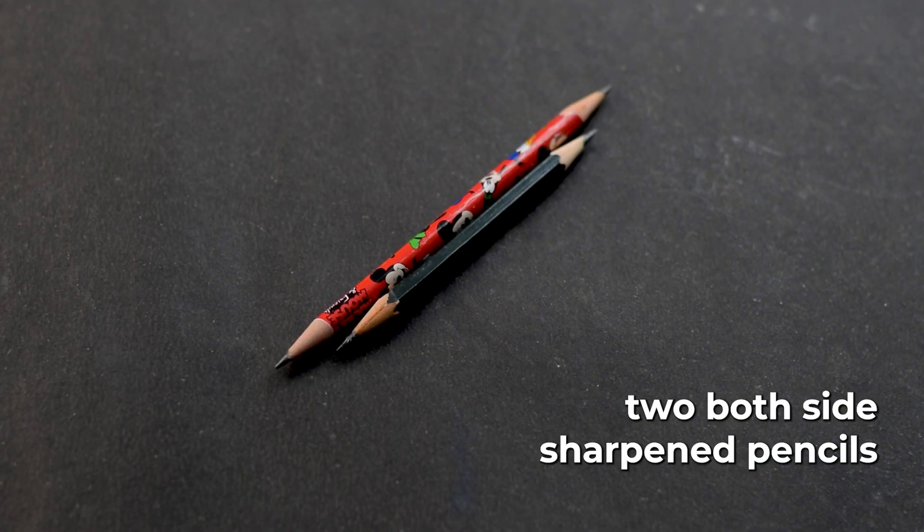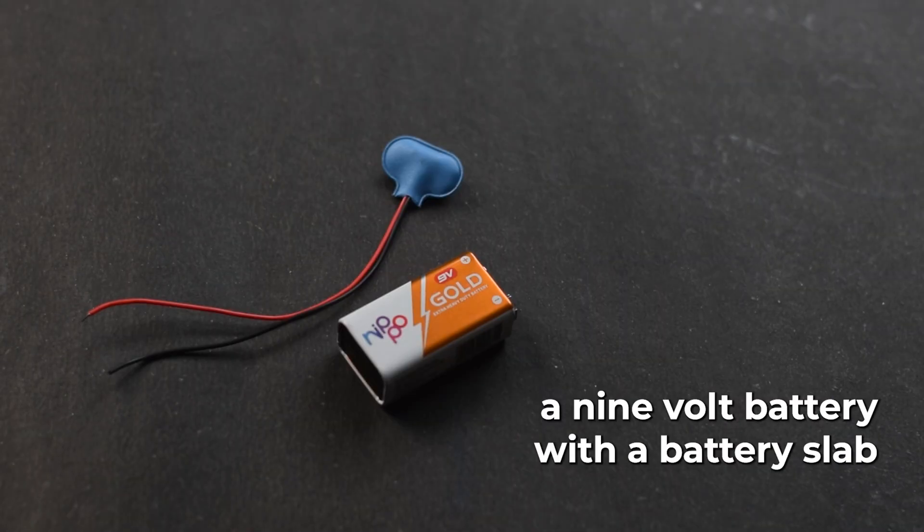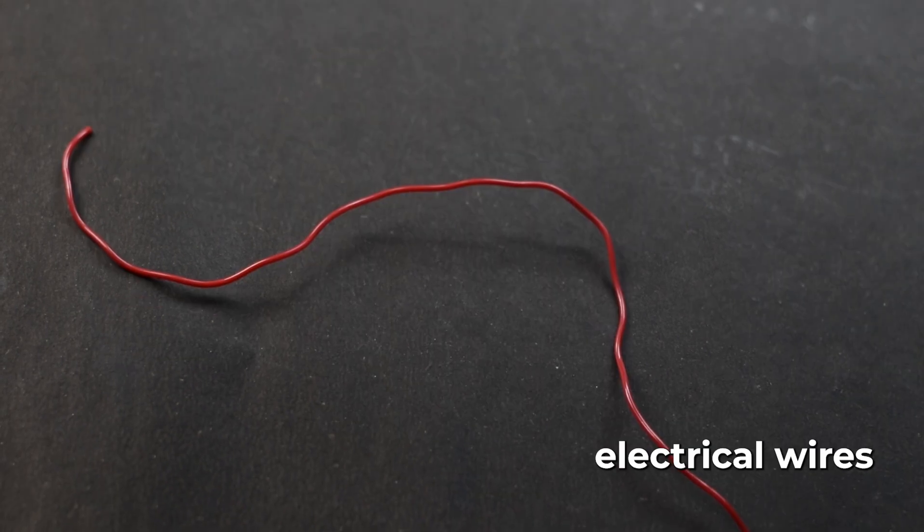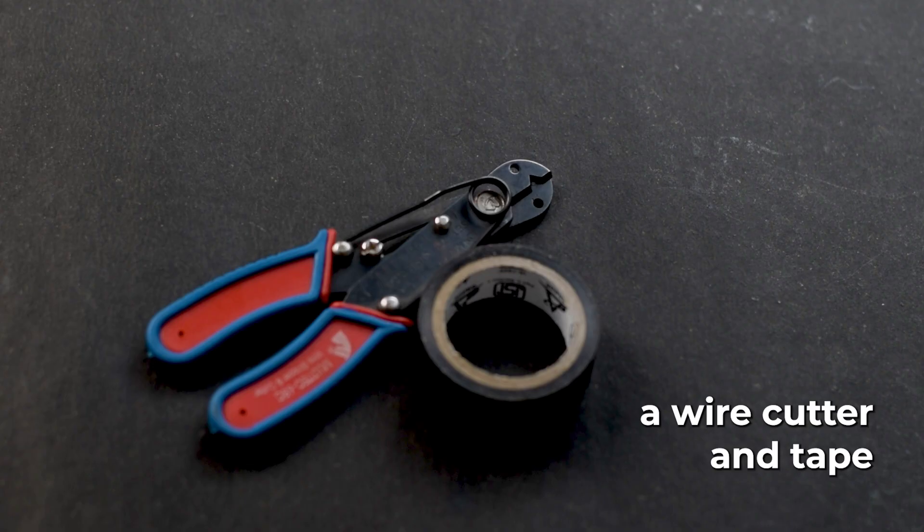To perform this experiment, you will need two both-side sharpened pencils, a transparent plastic cup with a lid, a 9-volt battery with a battery snap, electrical wires, baking soda, a wire cutter and tape.